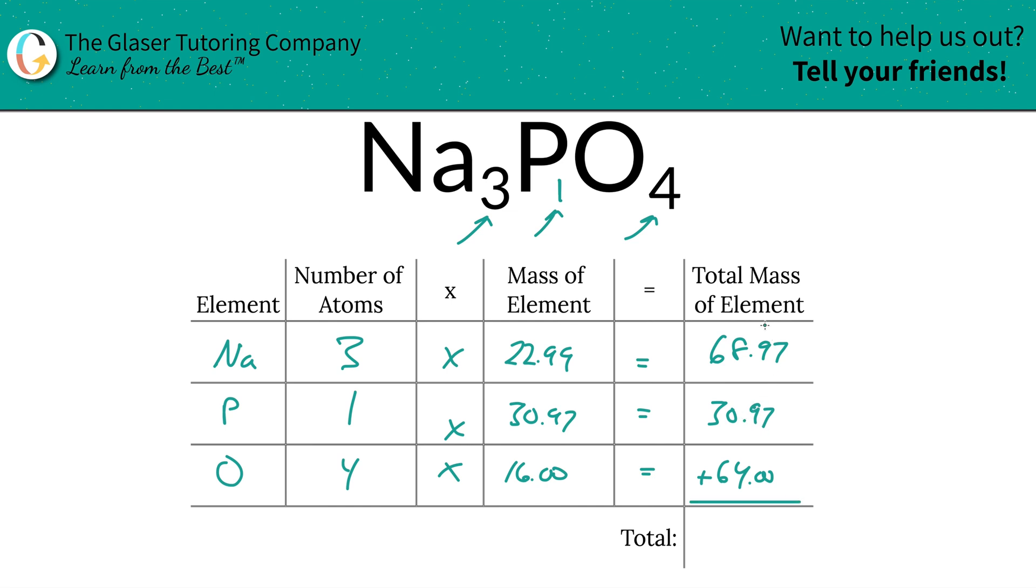Then to find the total mass of the entire compound, all you have to do is add up all of these total masses of each individual element. So this is 160, this is 163.94. And the units here are an AMU, atomic mass unit. Why? Well, because we solved molecular mass. That's all there is to it, my friend.